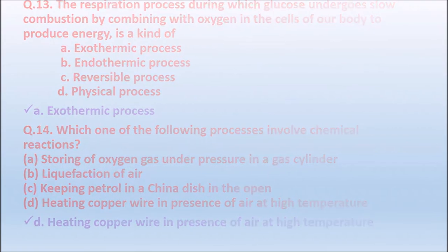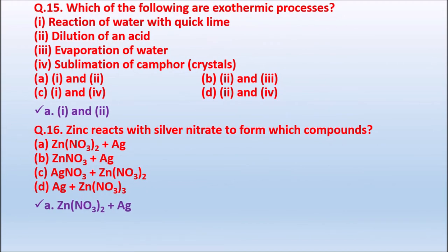Question 15: Which of the following are exothermic processes? Options: reaction of water with quick lime; dilution of an acid; evaporation of water; sublimation of copper crystal. An exothermic process releases energy. When water is added to quick lime, heat is evolved. When acid is diluted in water, heat is also evolved. So the correct answers are reaction of water with quick lime and dilution of an acid.